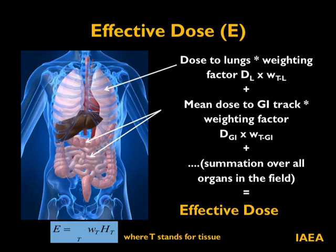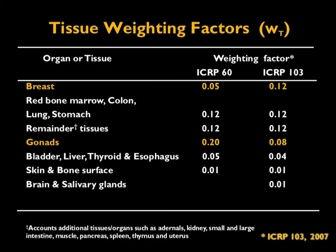The computation of effective dose is very complex. We need to account for all organs in the path of the primary exposure region. For a chest CT, one must account for the lungs, bones, heart, and breast. Each organ's dose is multiplied by a tissue weighting factor, and by summing these products we arrive at an effective dose for that CT procedure. In summary, effective dose is the product of the tissue weighting factor multiplied by the dose to each organ for a particular procedure.